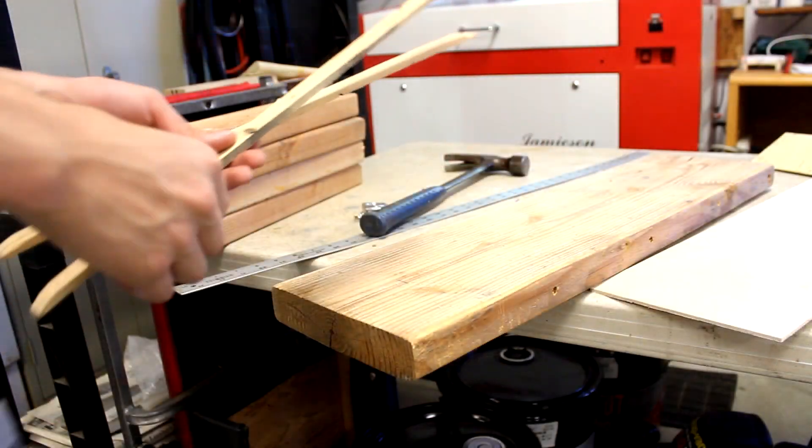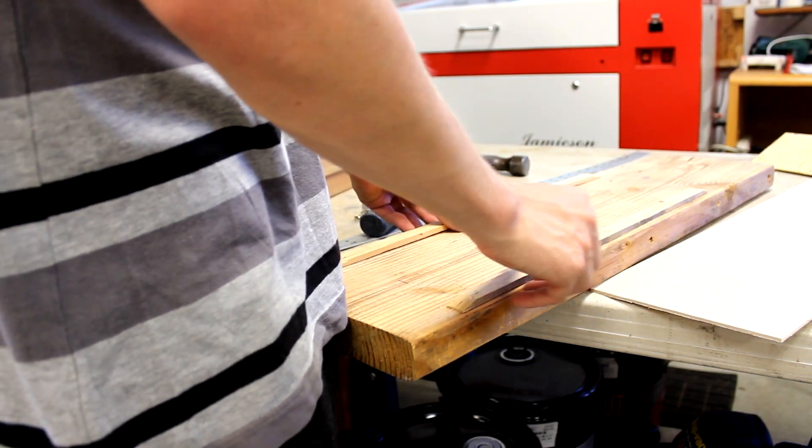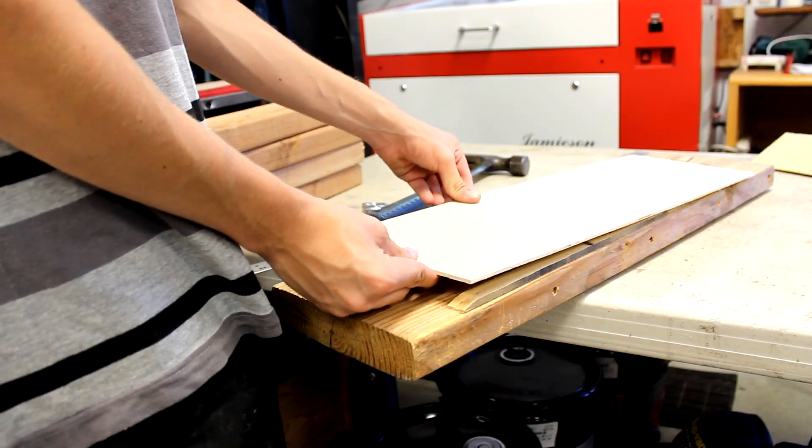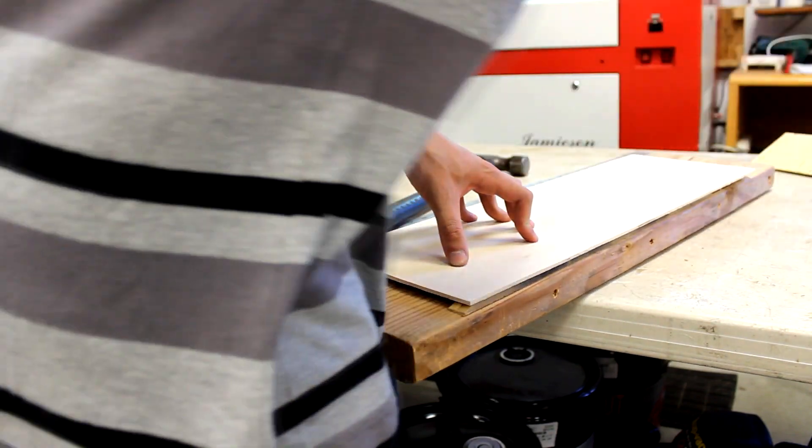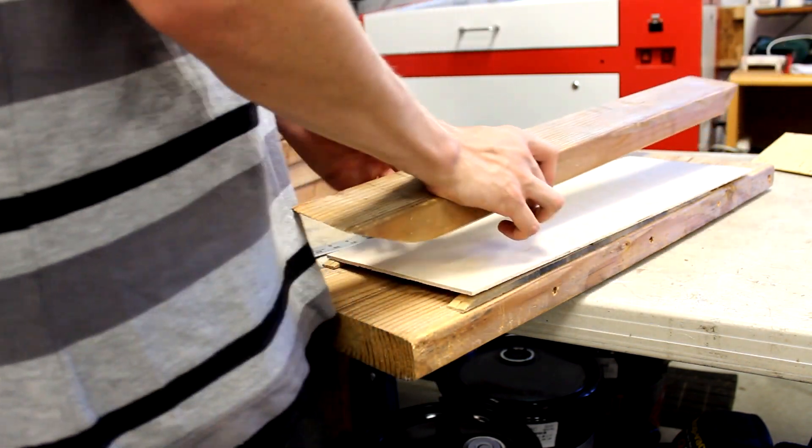Now that you've got all you need to press your kicktails, I'll show you how to add some concave. I rip thin strips of scrap wood on a table saw which I run lengthwise on the outsides of my press. The thinner the strip, the less concave your board will have. The thicker the strip, the more it'll have.